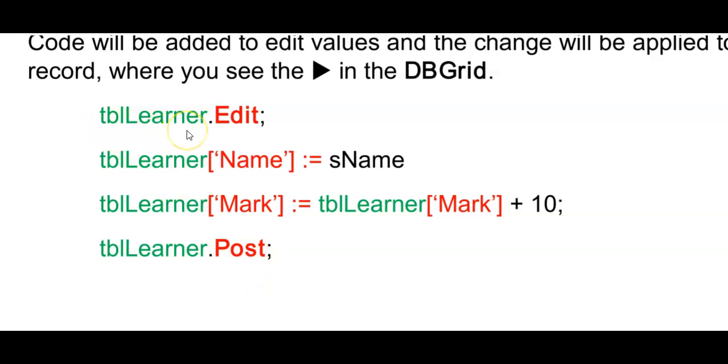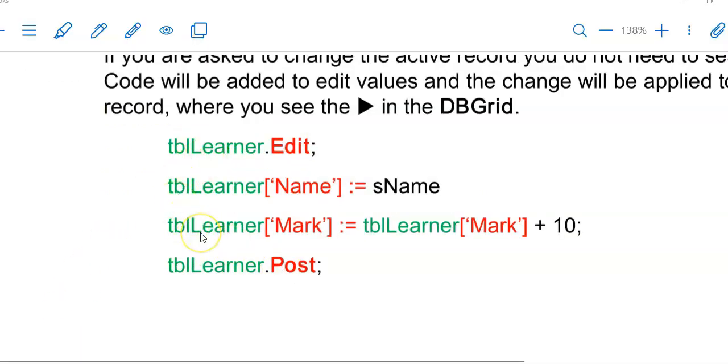So start with the name of your table, your ADO table component, followed by an edit and in here you can make changes to only one field or to more than one field and the code here looks the same as in our insert. So here we can use variables or we can also, for example, add 10 to an existing value in a field. So we want to add 10 to a mark. So we take what the mark is at the moment and then we can add a value to it.